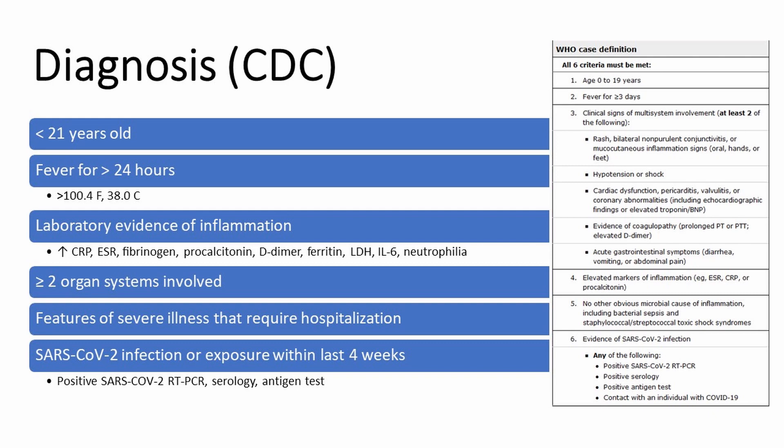In terms of presentation by organ system: cardiovascular includes shock, elevated troponin, elevated BNP, abnormal echocardiogram, and arrhythmia. Respiratory includes pneumonia, ARDS, and pulmonary embolism. Renal includes AKI and renal failure. Neurologic includes seizure, stroke, and aseptic meningitis. Hematologic includes coagulopathy. GI — the most common — includes abdominal pain, vomiting, diarrhea, elevated liver enzymes, ileus, and GI bleeding. Dermatologic includes erythema, mucositis, and rash.